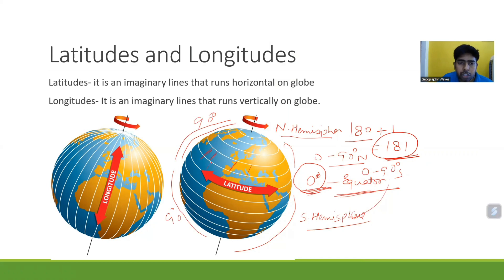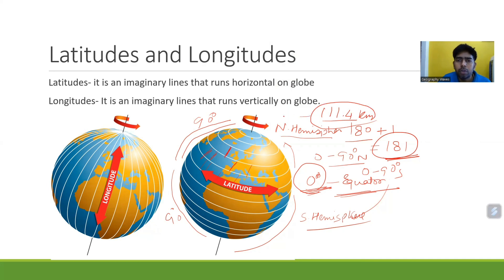What is the distance between two latitudinal lines? The distance between two latitudinal lines is 111.4 km.